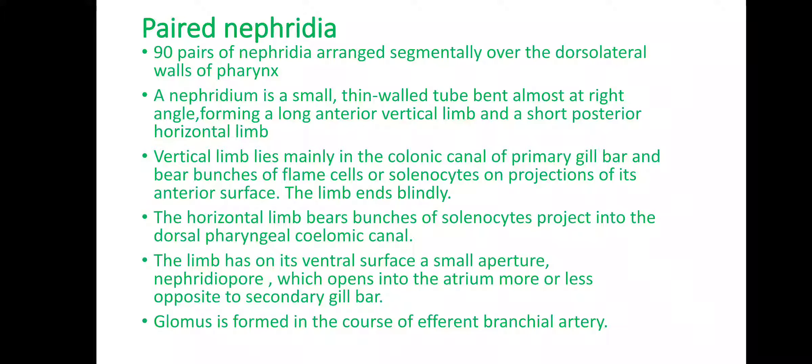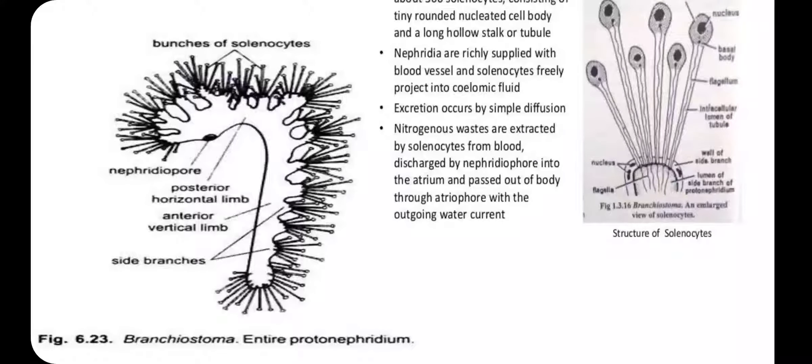Each nephridium has two limbs: one is the vertical limb and the other is the horizontal limb, forming an L-shaped inverted structure. These are segmentally arranged, with the anterior limb from segments 90 to 100. In these branches — the vertical limb and horizontal limb — L-shaped inverted structures are present. Solenocyte cells are present here. Every nephridium has about 500 solenocytes.